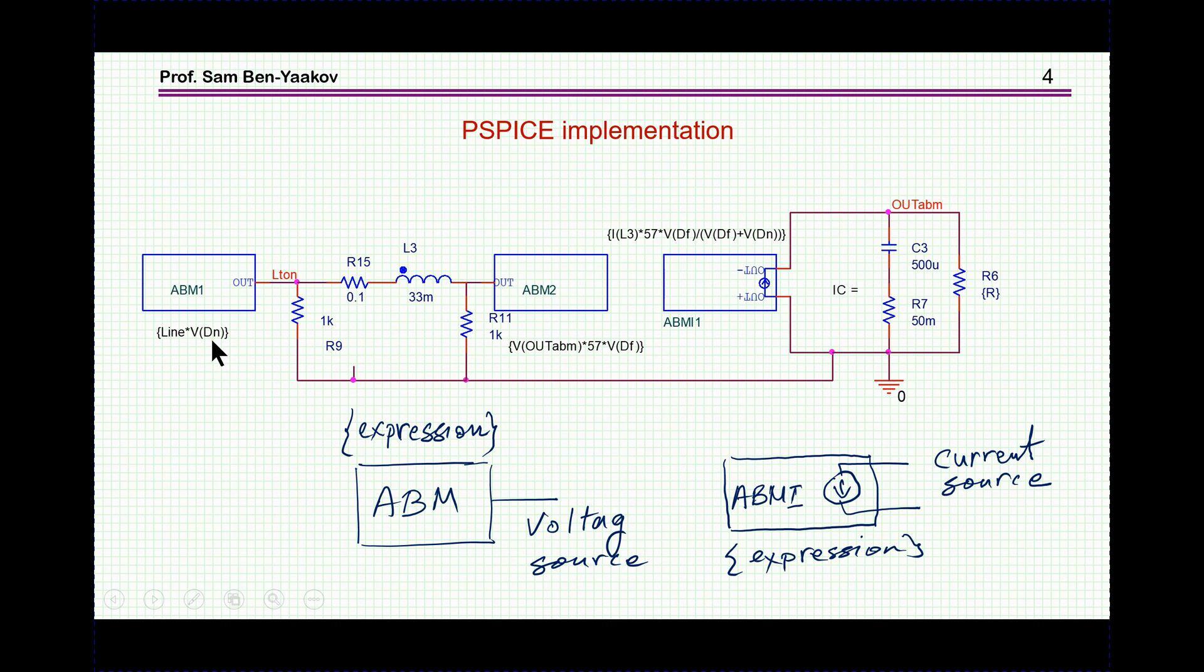So, in this case, to get the average voltage here, I put the line, this is the input voltage, times VDON. Now, DON is now coded into voltage. So this is the voltage of a node in the circuit, I'll show it in a minute, that represents the DON ratio. So this is the average voltage on the inductor on one side, and similarly, we have the average voltage on the inductor on the other side, which is the output voltage times 57, this is the turns ratio, times VDOFF.